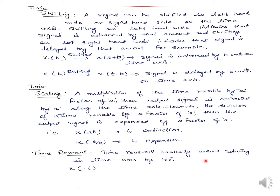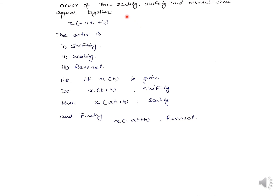Time reversal basically means rotating on the time axis by 180 degrees. So if signal X(T) is given, then X(-T) is the reflected version of the same signal on the negative side of the axis. Whatever values were defined on the positive side will now go to negative, and the values which were appearing on the negative side will go to the positive side.